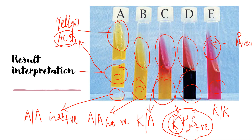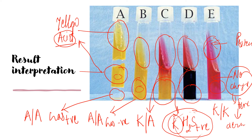In the K/K result, the slant shows the bacteria have utilized the protein, and the butt shows no color change. This means the bacteria are not fermentative, or they are strict aerobes — because if bacteria could ferment glucose, there would be acid production and yellow color in the butt. The absence of yellow color indicates the bacteria are non-fermentative or non-anaerobic. I hope you now know a little about the TSI test. Please leave any queries in the comment box. Thank you.